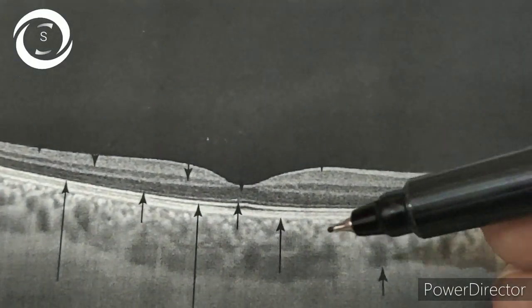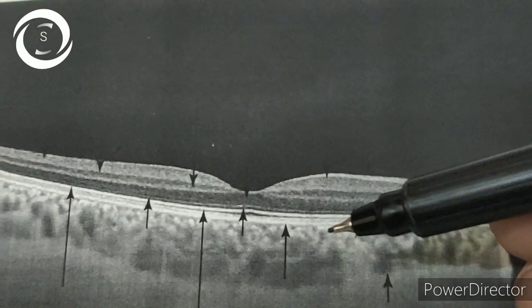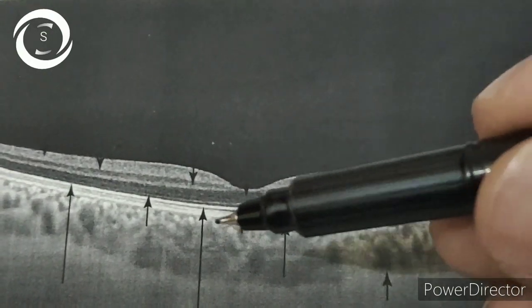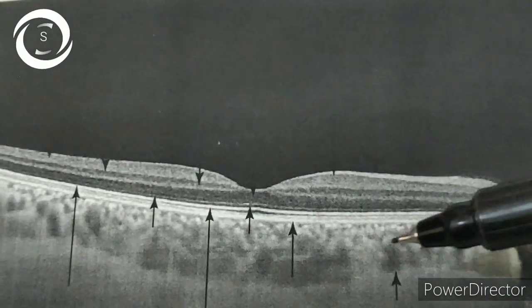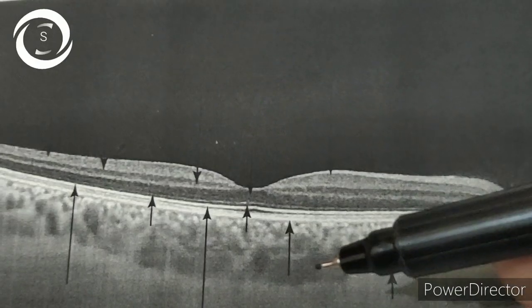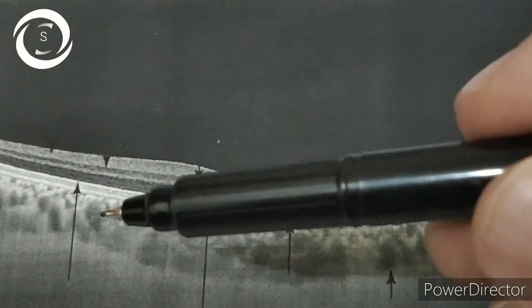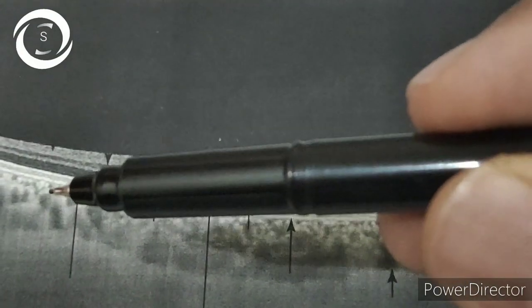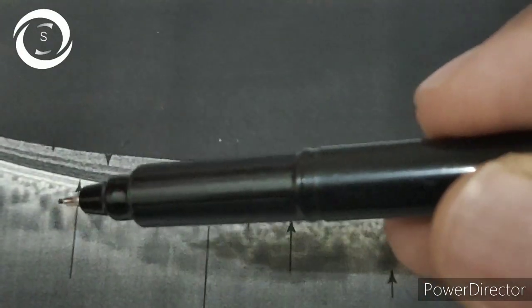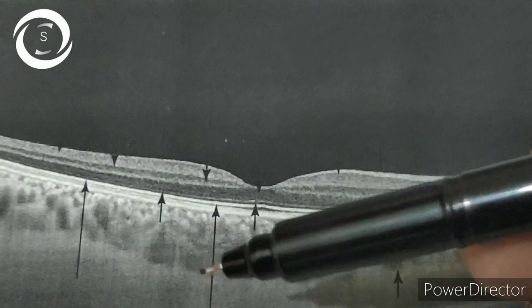Beneath the RPE Bruch's membrane is the choriocapillaris, and you can easily appreciate the lumens of the large choroidal vessels here. These are the choroidal vessels. You can see the round lumens of the choroidal vessels.